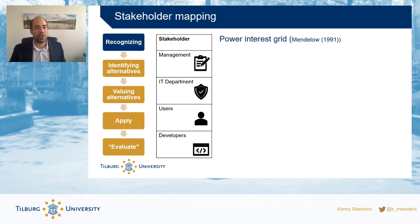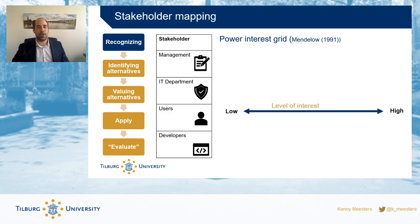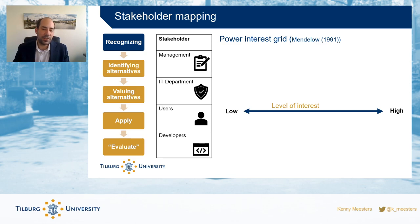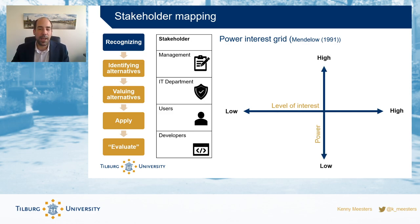Another stakeholder group is developers, who focus on the systems, make design choices, and don't want delays — especially if they are contracted. All these stakeholders play a role. One way to manage them is by using a power-interest grid from Mendelow (1991). You classify stakeholders across two dimensions: the level of interest or motivation they have (low to high), and the power they have to change things or influence a decision (low to high).